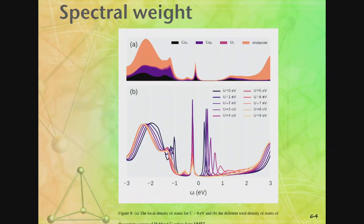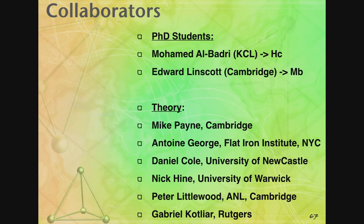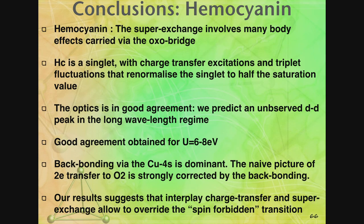So I will conclude here. I will have to skip the hemocyanin topic, but let me just finish by listing my collaborators. So Mohamed Al-Badri at KCL did most of the calculation for the hemocyanin and Edward Linscott in Cambridge for myoglobin. Of course, in the theory part, many people were involved, but the project started in collaboration with Mike Payne, originally Antoine Georges, and Daniel Cole and Nick Hine very much contributing related to the design of the project, and especially Danny is really our biological expert. So I will leave you with my conclusion. Thank you.